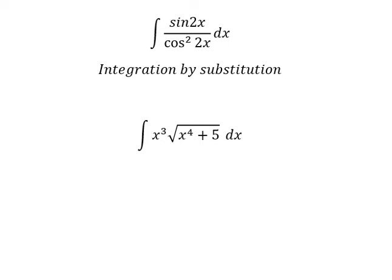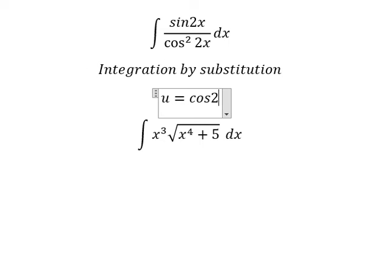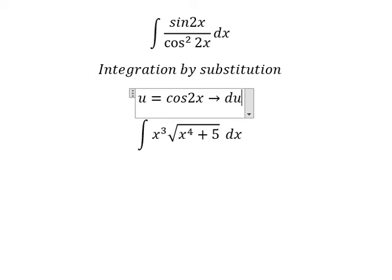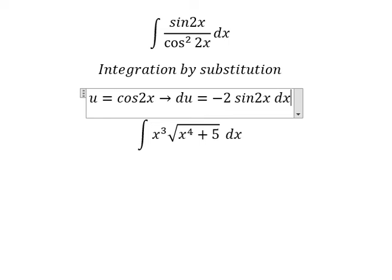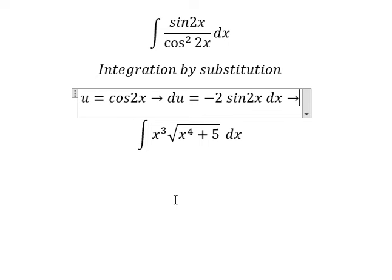For problem 1, I will put u equal to cosine 2x. Then we do the first derivative for both sides, and we get du equals negative 2 sine 2x dx. Because we don't have negative 2, we need to divide both sides by negative 2.